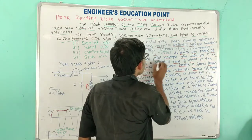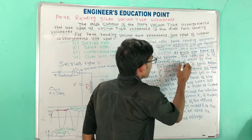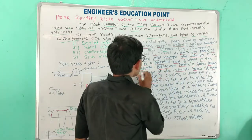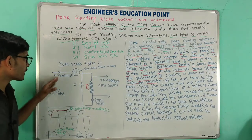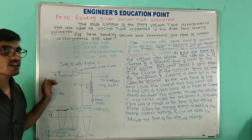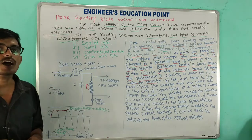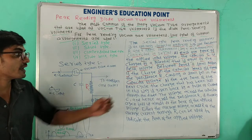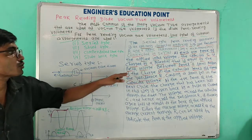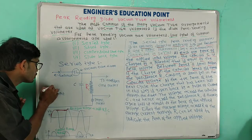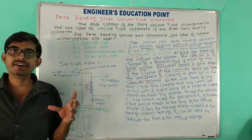At each positive peak of the applied input voltage — given by E_m sin(ωt) — the capacitor C is charged to a potential equal to the peak voltage. At the peak point, the capacitor becomes fully charged, equal to the peak voltage of the applied input.